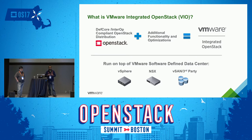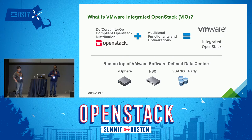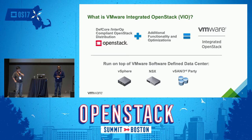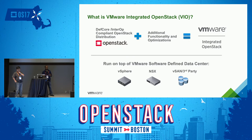Our goal is to run OpenStack on VMware's stack, which is basically vSphere, NSX, and vSAN — though vSAN is not a key requirement. NSX is the most preferred SDN provider and most of our customers use it, but technically we don't require NSX either. The minimum requirement is to have a vSphere environment — that's the only platform we support.